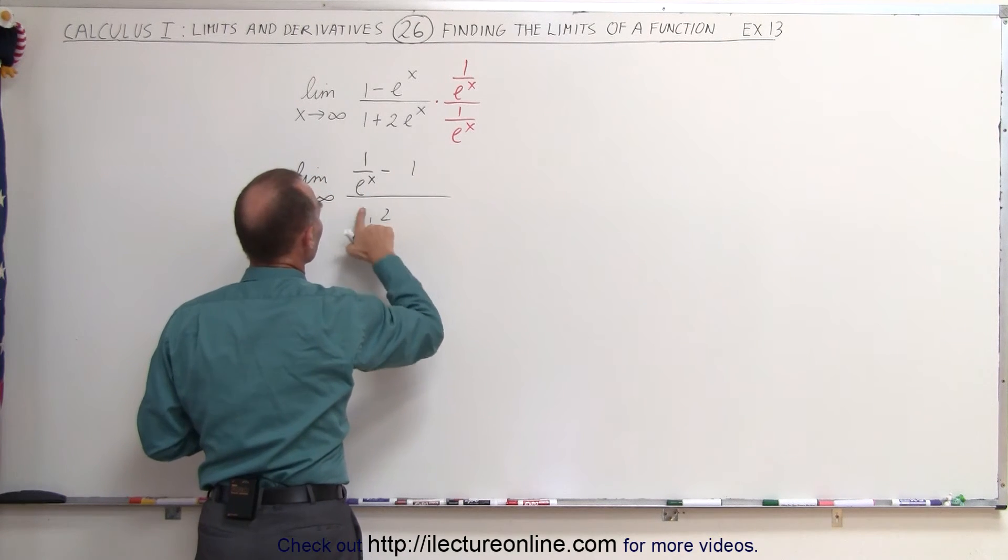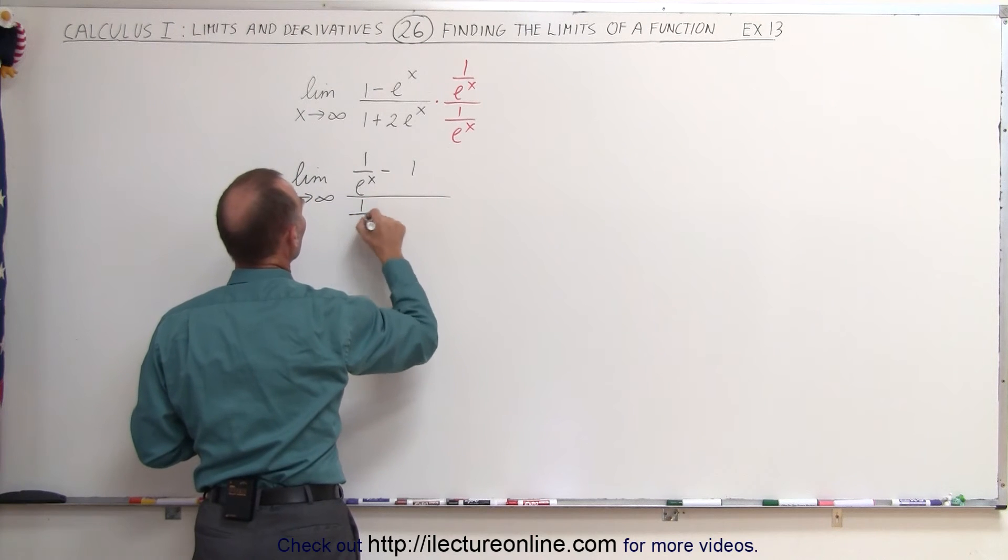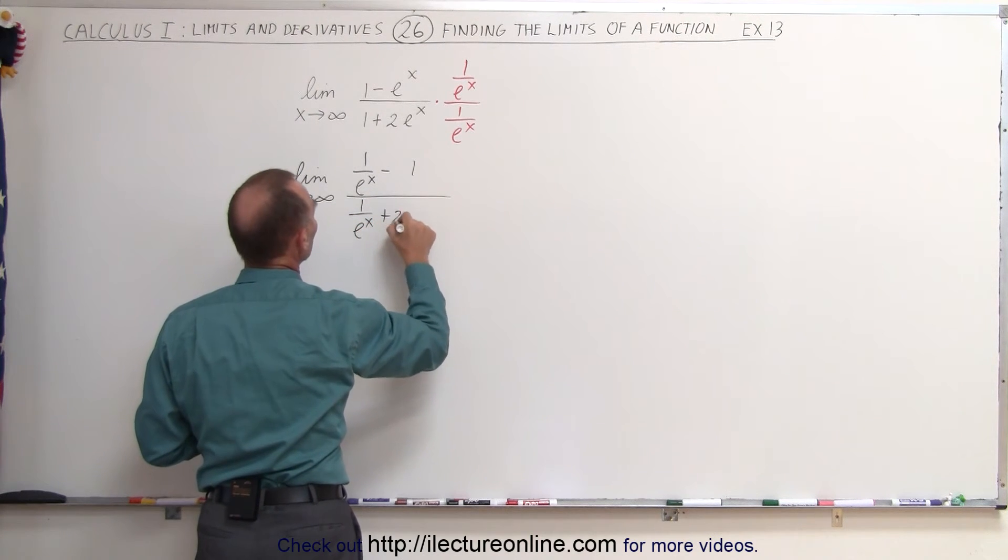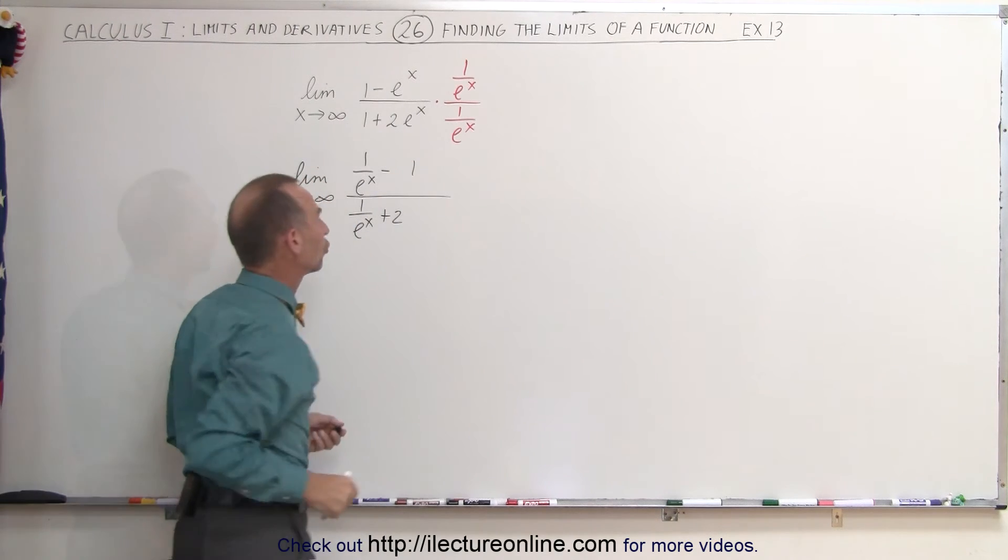Oh, wait a minute. I have to divide this by e to the x as well. So that's 1 over e to the x plus 2 times e to the x divided by e to the x is simply plus 2.